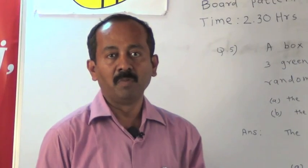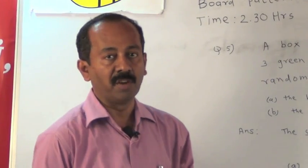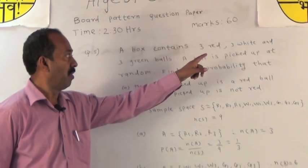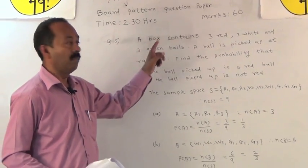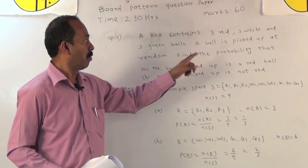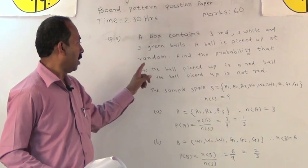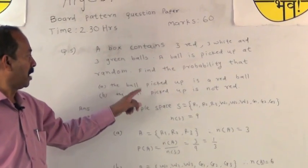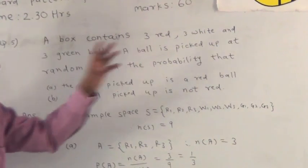Let us discuss one more example from question for you. A box contains three red, three white and three green balls. A ball is picked up at random. Find the probability that A, the ball picked up is a red ball, and B, the ball picked up is not red.